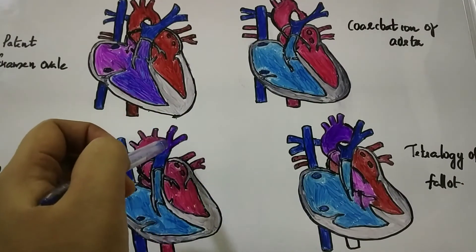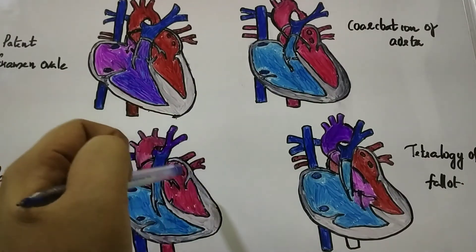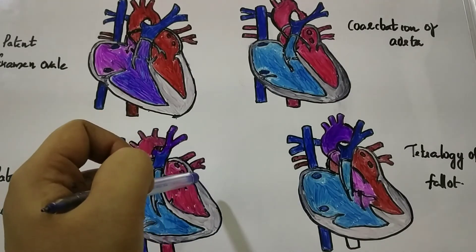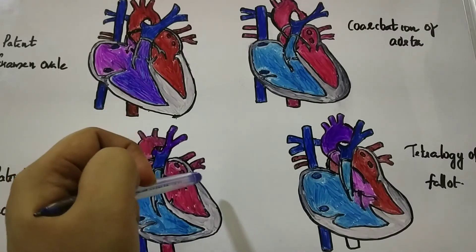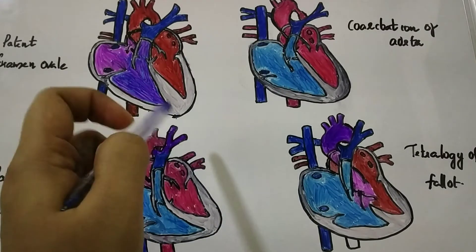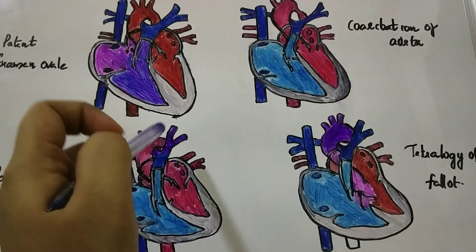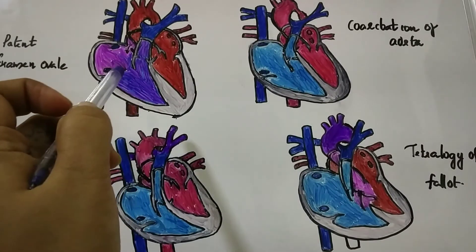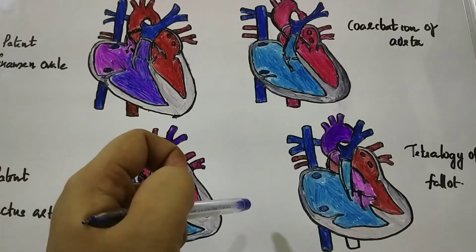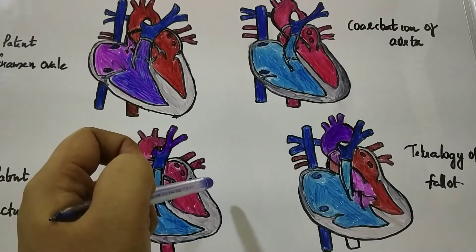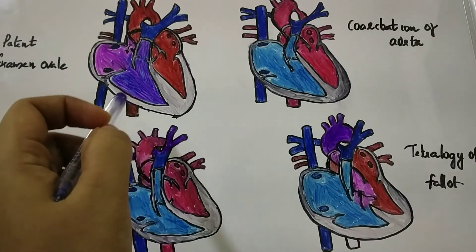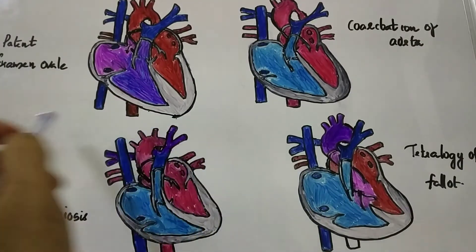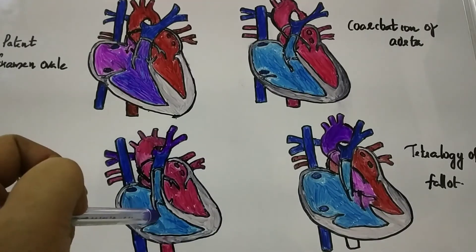As a result, there is more fluid flowing towards the lungs, making breathing difficult. The symptoms are shortness of breath, tachycardia, enlarged heart, widened pulse pressure, and poor weight gain in infants. The treatment is surgical closure or manual closure.